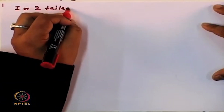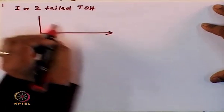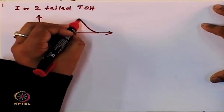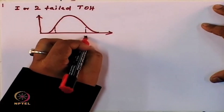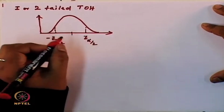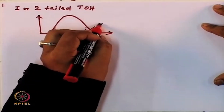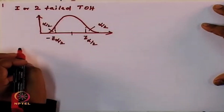Hello and welcome to today's lecture. Yesterday in last day's lecture we had discussed about one or two tailed test of hypothesis. In a two tailed test of hypothesis, depending on your confidence interval alpha, you determine this value of z which is z alpha by 2, and this area under the curve is alpha by 2.